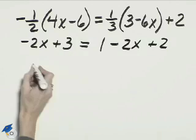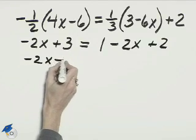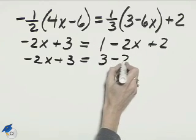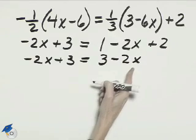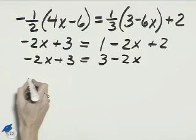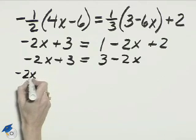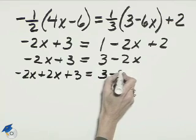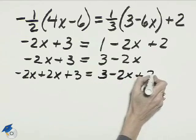Combine the like terms on the right. Negative 2x plus 3 on the left equals 1 plus 2 is 3 minus 2x. If we add 2x from the right to the left, negative 2x plus 2x plus 3 equals 3 minus 2x plus 2x.